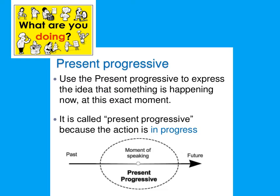You use the present progressive tense mainly to answer questions like, what are you doing? You would say: I am building a snowman, I am baking a cake, I am reading a newspaper, I am practicing the piano, and so on. Use the present progressive to express the idea that something is happening now, at this exact moment. It is called present progressive because the action is in progress — just like now, this is the moment of speaking. I am speaking to you, we use the present progressive form.